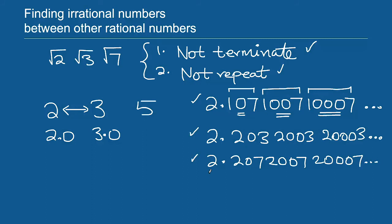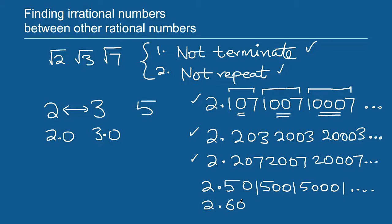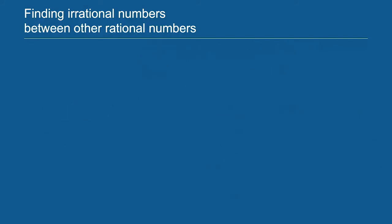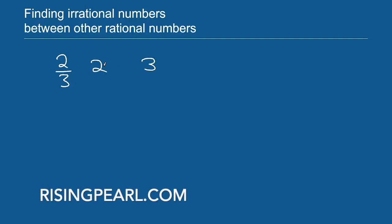That gives us three irrational numbers between 2 and 3. A fourth could be 2.5015001500015 and so on, and a fifth could be 2.60096000960009 and so on. So these are 5 irrational numbers between 2 and 3. Now let's look at a new example: find 3 irrational numbers between the rational number 2 by 3 and the number 2.